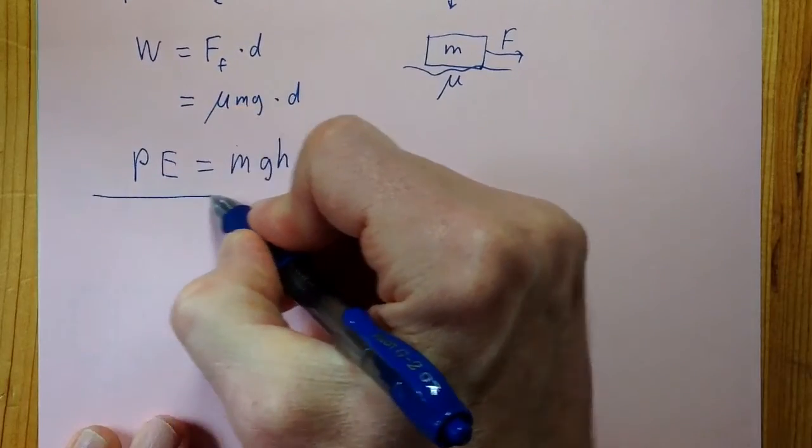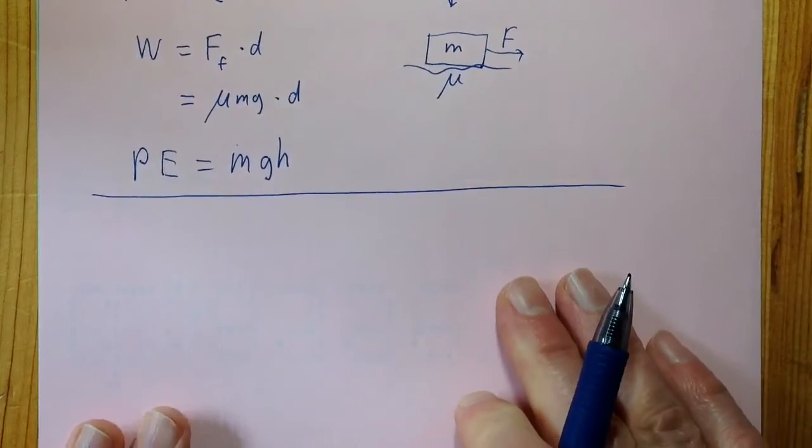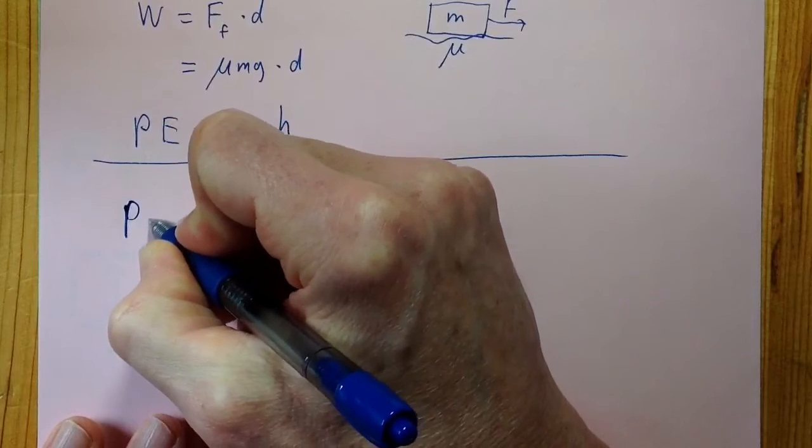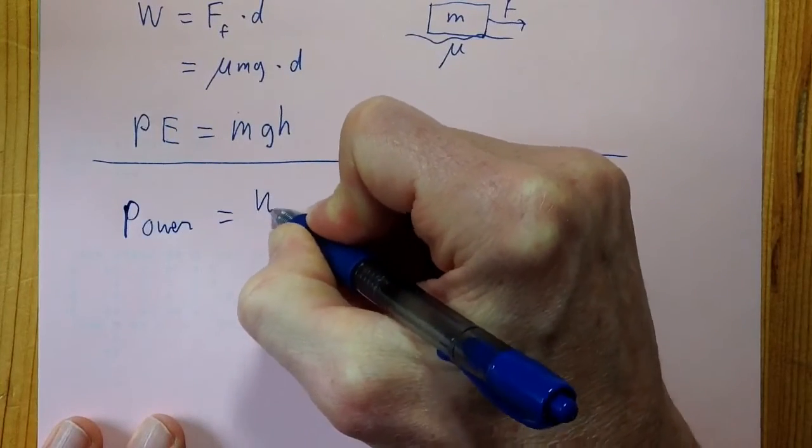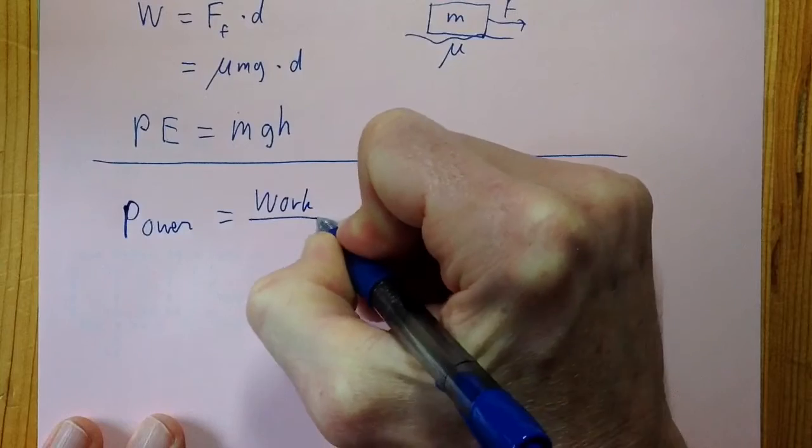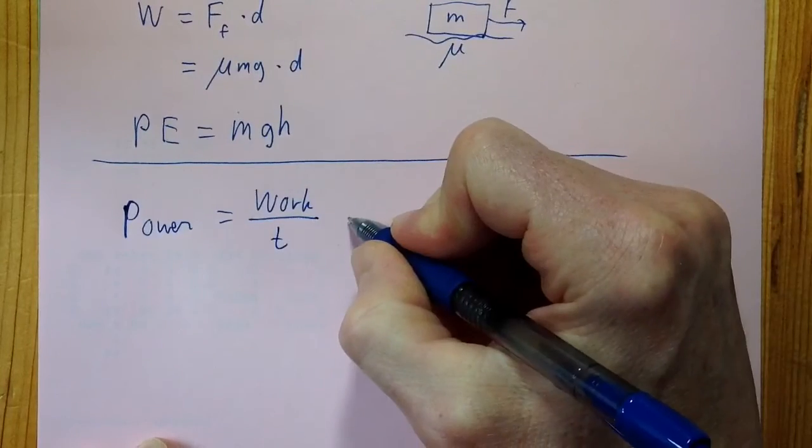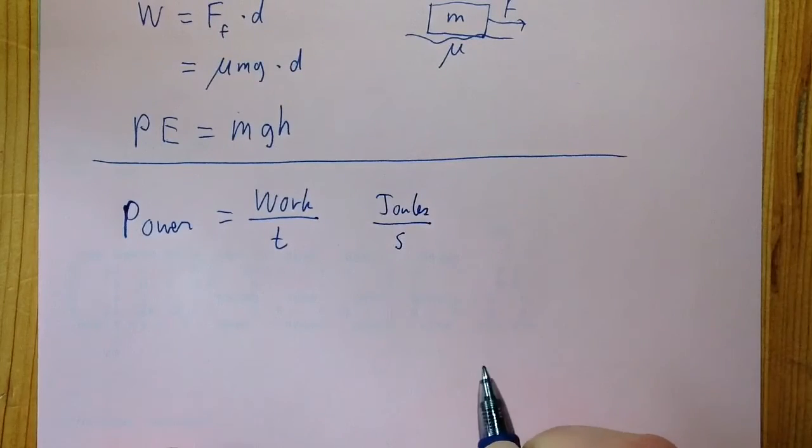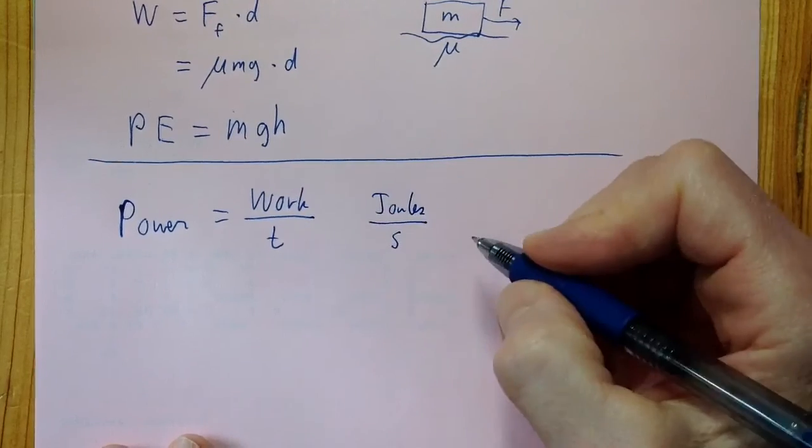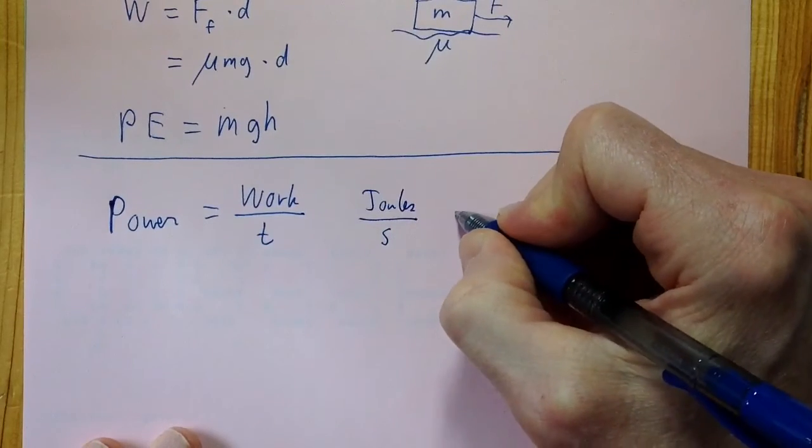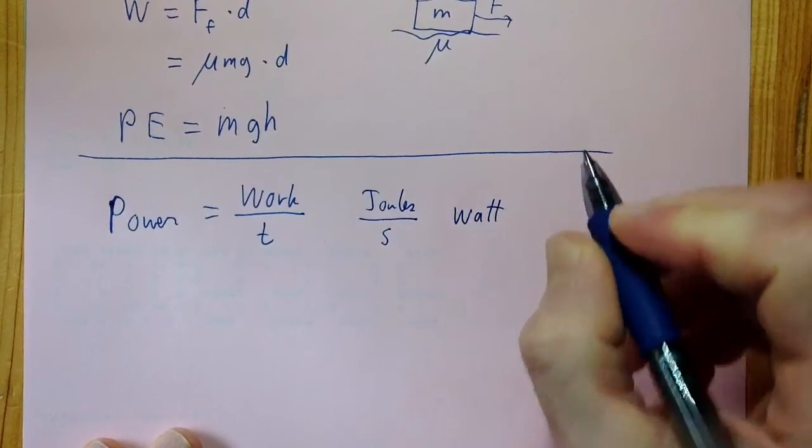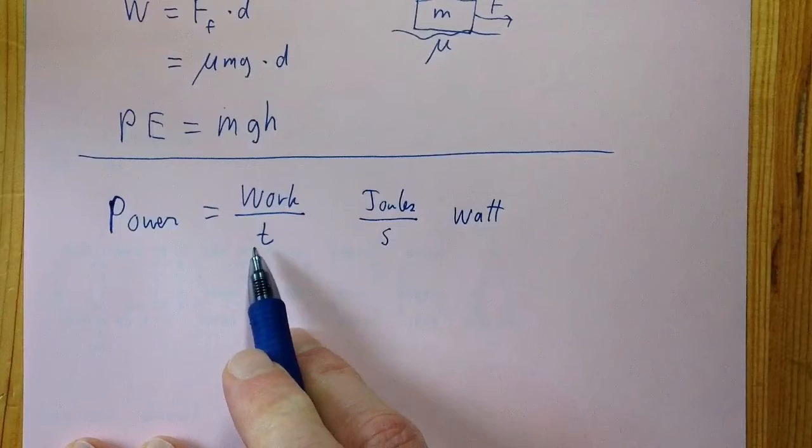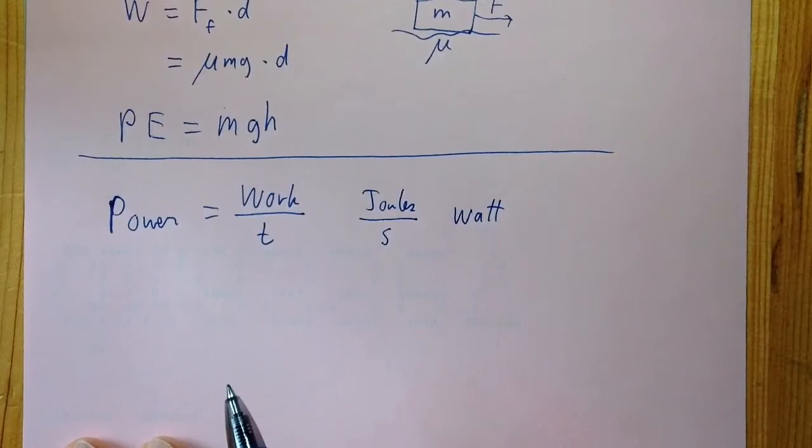Then, the next big idea is how fast you do work. So if you do work really fast, you should get credit for that. And that's called power. So power is defined as the work divided by the time it takes to do it. So that's going to be in joules. How many joules of work divided by how many seconds that you're able to perform it. And that has a special name also. A joule per second is a watt. So watt is the unit of power, and that's just saying how fast you do the work. If you do the same amount of work in one second versus ten seconds, you have ten times the power.